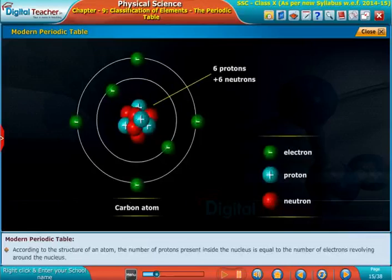According to the structure of an atom, the number of protons present inside the nucleus is equal to the number of electrons revolving around the nucleus.